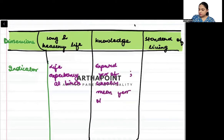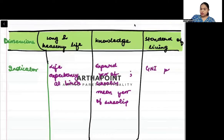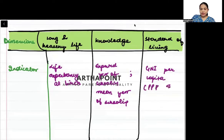The other indicator for knowledge is mean years of schooling — so expected years of schooling and mean years of schooling. And for standard of living, it is measured by Gross National Income per capita, calculated at purchasing power parity and mentioned in dollars — same as the Human Development Index.